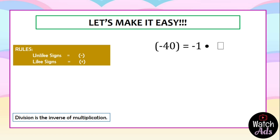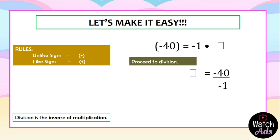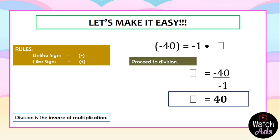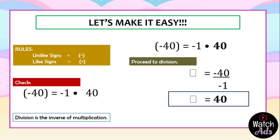Another example: negative 40 equals negative 1 multiplied by something. Since division is the inverse of multiplication, we divide the product by the known factor: negative 40 divided by negative 1. They are like signs, so the answer is positive. 40 divided by 1 equals 40. We check: negative 1 multiplied by 40 — they have unlike signs, so the answer is negative 40. Our answer of 40 is correct.